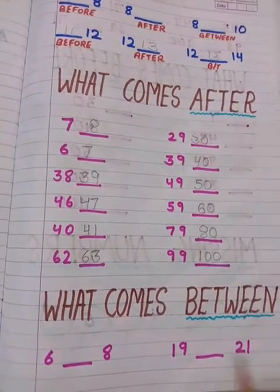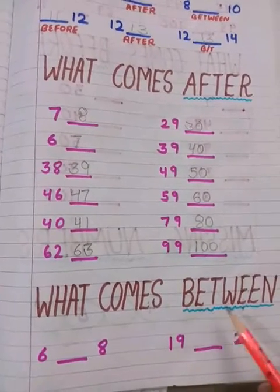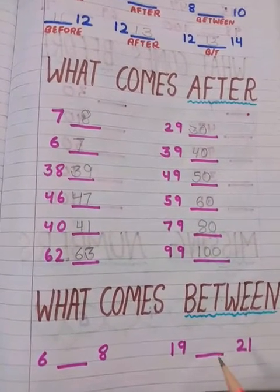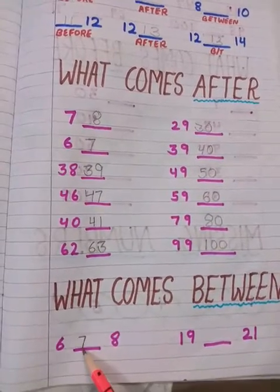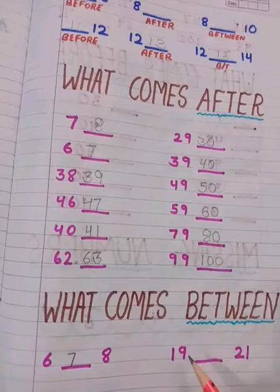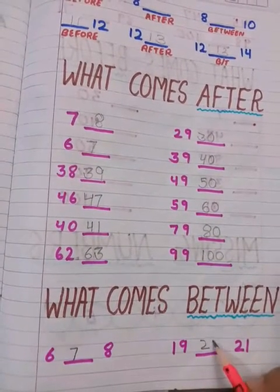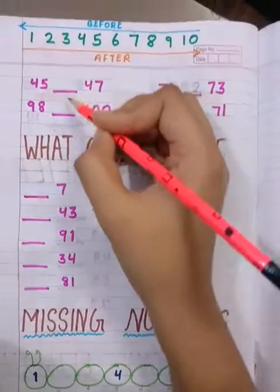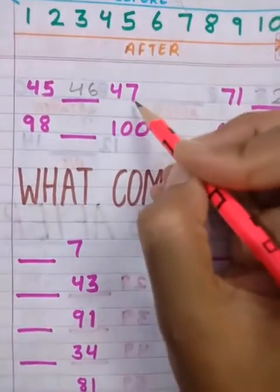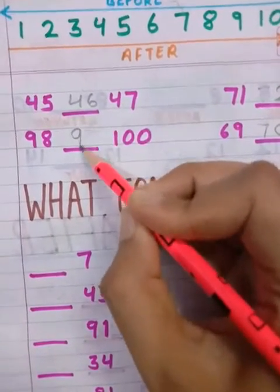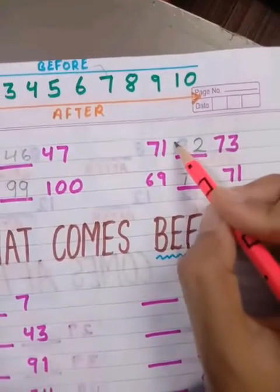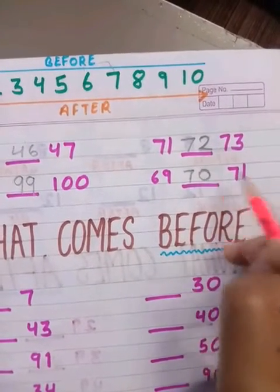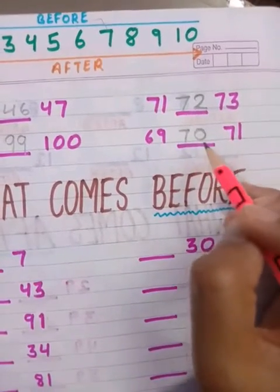Let's take another exercise. What comes between? What comes between means beech. 20, 19, 20, 21. 45, 46, 47. 98, 99, 100. 71, 72, 73. 69, 70, 71. 69, 71. Kya aya inke beech mein? 70. Understood?